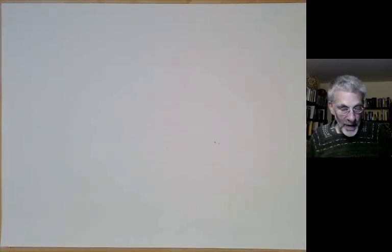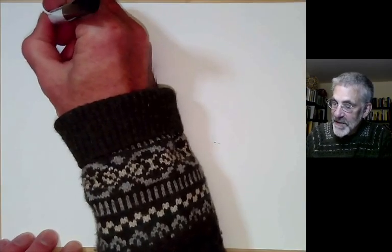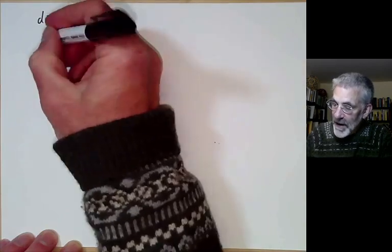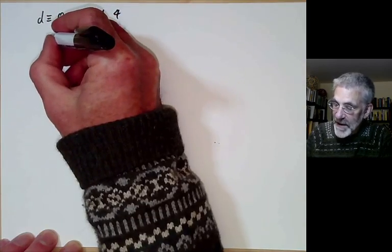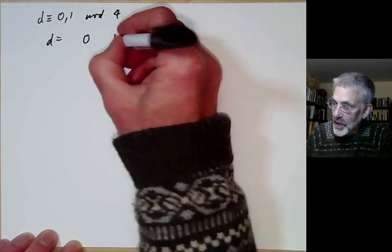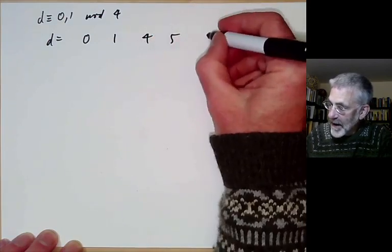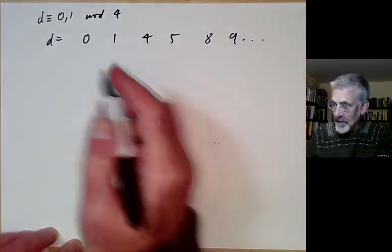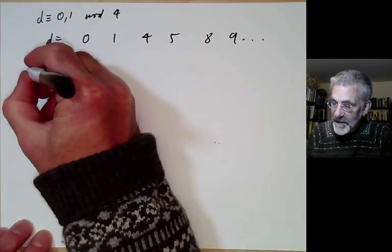The discriminant d must be congruent to 0 or 1 mod 4. So for d ≥ 0, d can be 0, 1, 4, 5, 8, 9, and so on. We're going to look at a few of these cases.